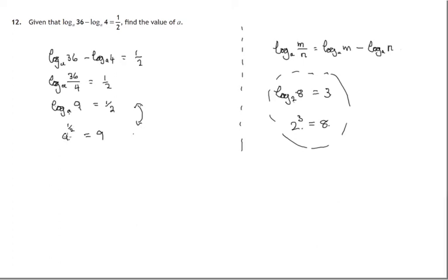Now we know a to the power half is the square root. Square root of a is 9. Square root of a number is 9, therefore the number must be 81.